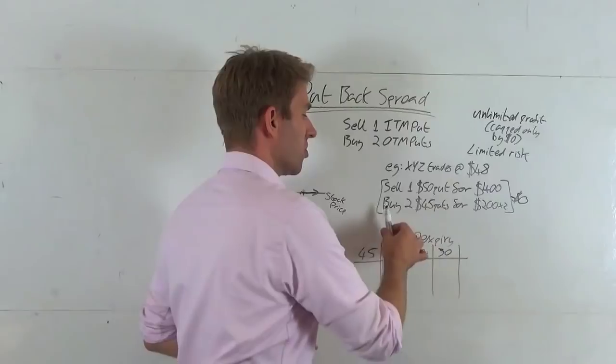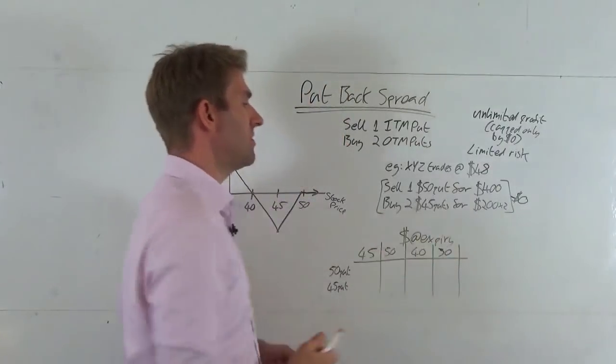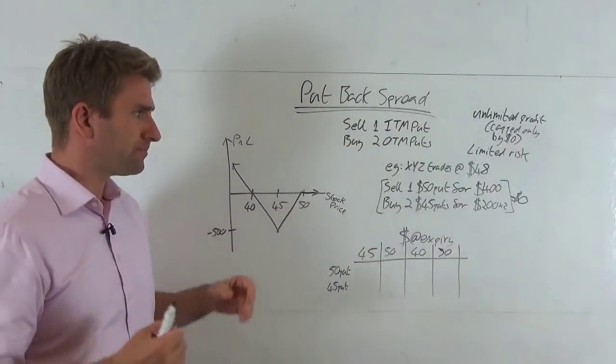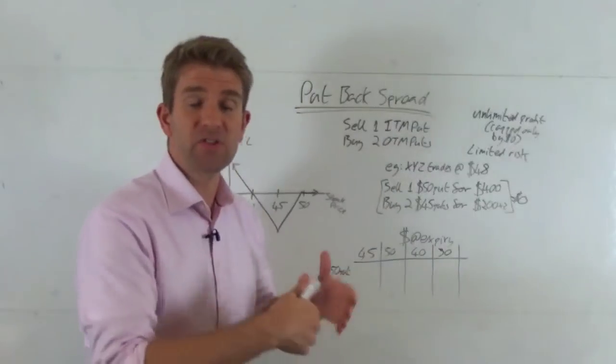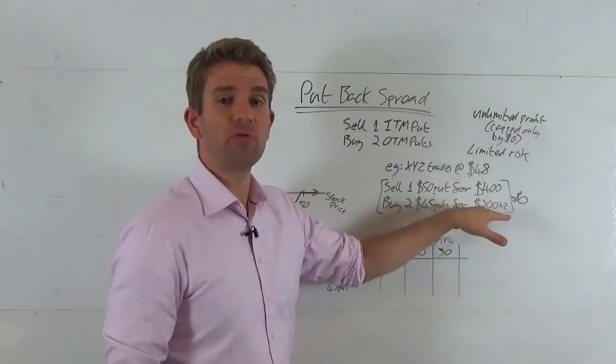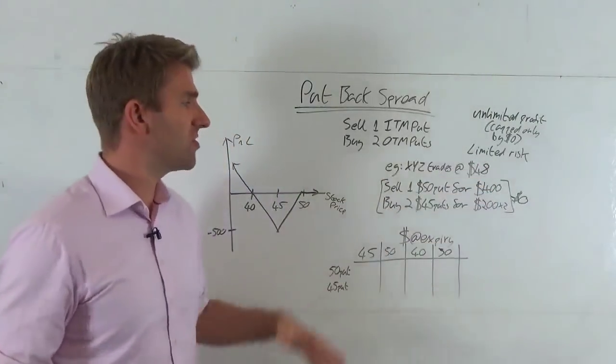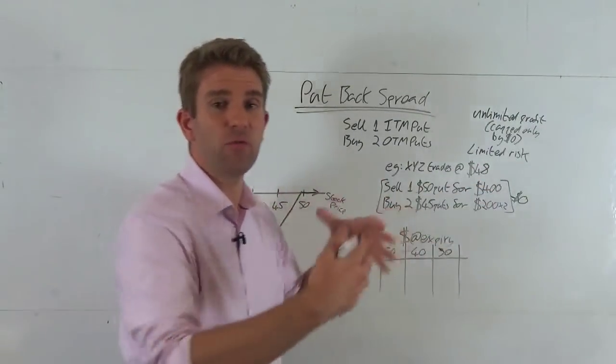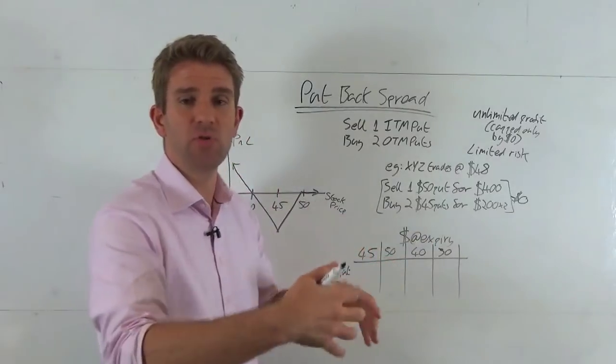But we take that $400 and we buy two $45 puts. Now the $45 puts are out of the money, so they're going to be much cheaper. And we buy two of those and we spend $200 each on those, for $400. So the net cost to us is zero. We receive $400, pay out $200 times two - $400. The net is zero for the deal.